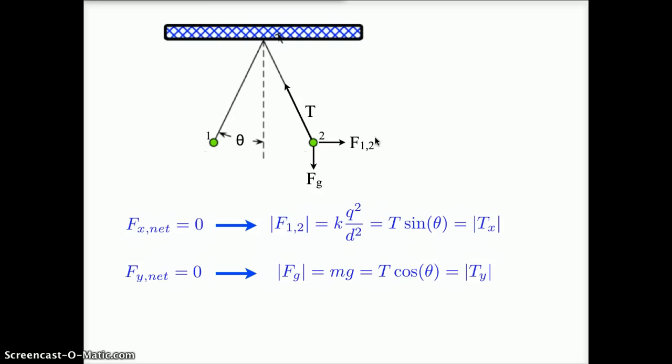I can now write my net force in the x and y direction equations. The net force in the x direction is 0, which tells me that the electric force of charge 1 exerted on charge 2 has to be equal in strength to the x component of the tension. So kq squared over d squared equals T sine theta. The net force in the y direction is also 0. So the force of gravity is equal in magnitude to the y component of tension. mg equals T cosine theta. We now have two equations and two things we don't know. We don't know T and we don't know q.